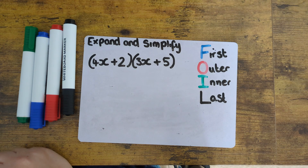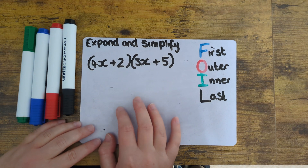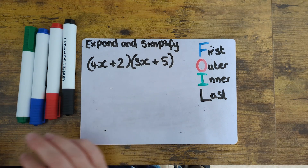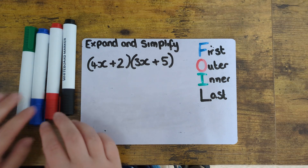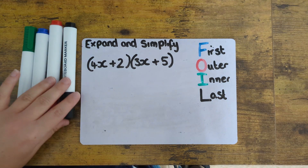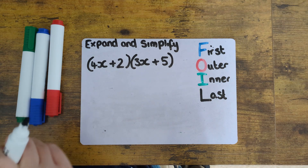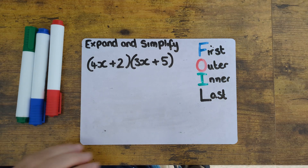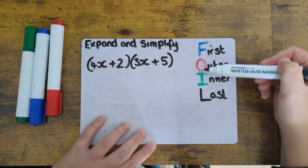Hi everyone, welcome back for another video. Today we are looking at expanding and simplifying double brackets. To help us we're going to use the acronym FOIL and we're going to use different colour codes, which you can use highlighters for, to help us solve these problems.